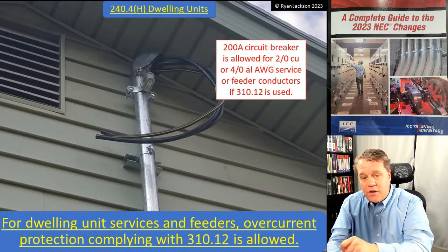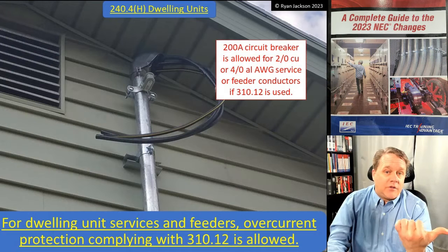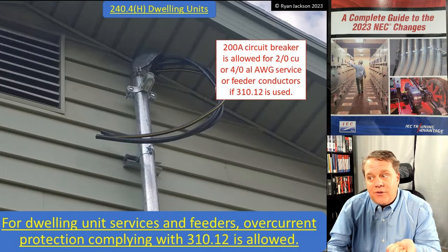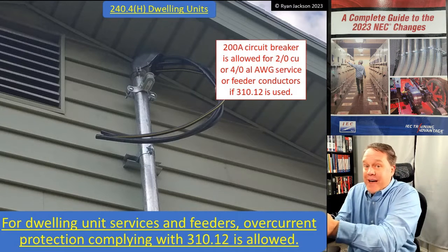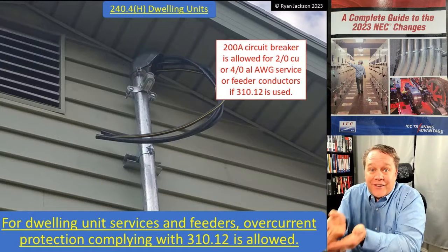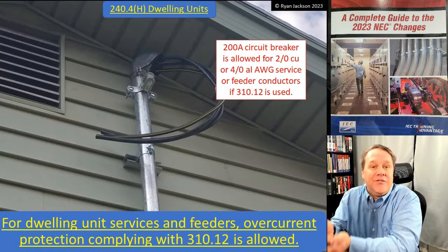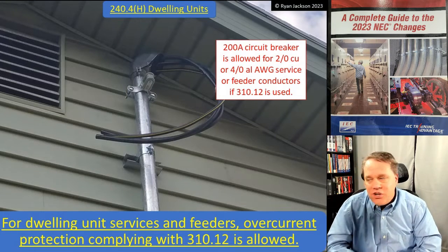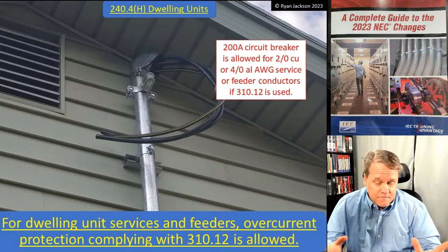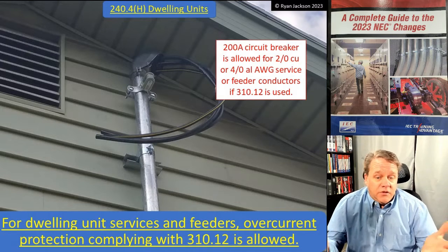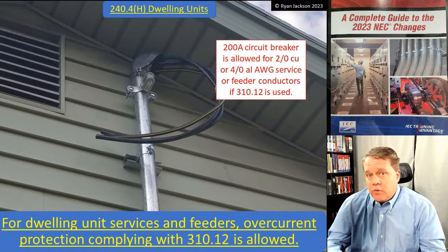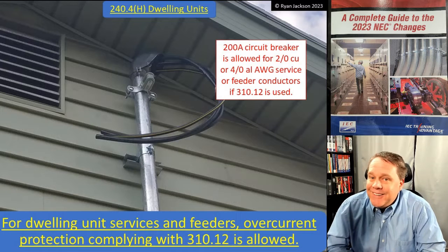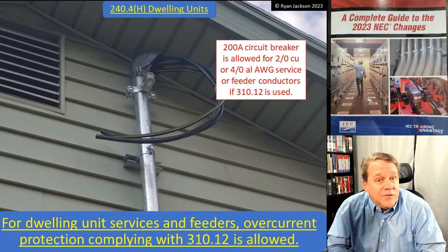Because 310.12 changes the ampacity of those conductors — giving them more ampacity than you'd normally have — going back to 240.4, the conductors are already protected at their ampacity. So 240.4(H) doesn't hurt anything; maybe it removes some field disagreements, but from a code-purist perspective it doesn't really need to be in the NEC. Either way, let's keep going into Article 240 in the next video.